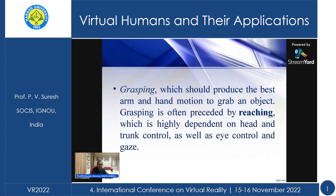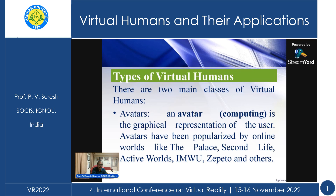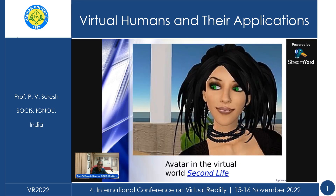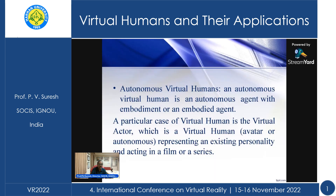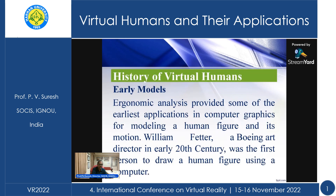There are two main classes of virtual humans. One is an avatar — for example, one in the virtual world Second Life. The other is an autonomous virtual human, which is an autonomous agent with embodiment. A particular case of a virtual human is the virtual actor representing an existing personality and acting in a film or series. You can have a teacher, a political leader — a virtual human can be represented for any human.